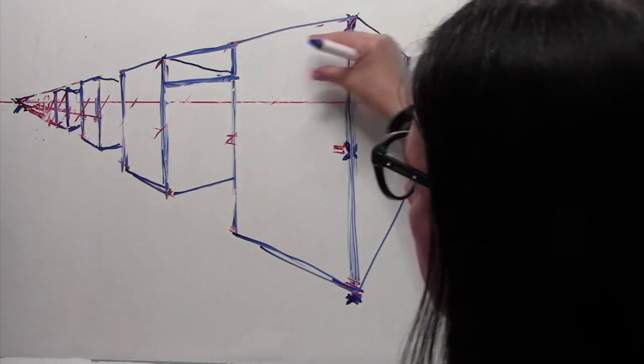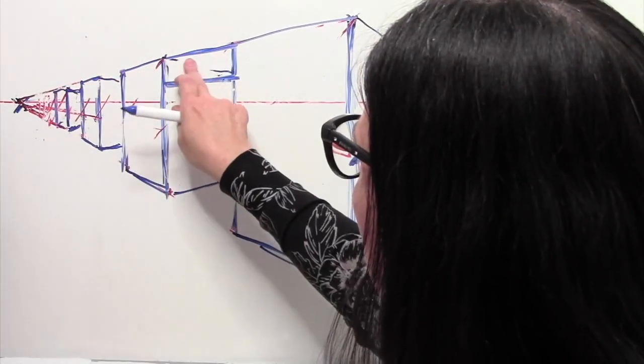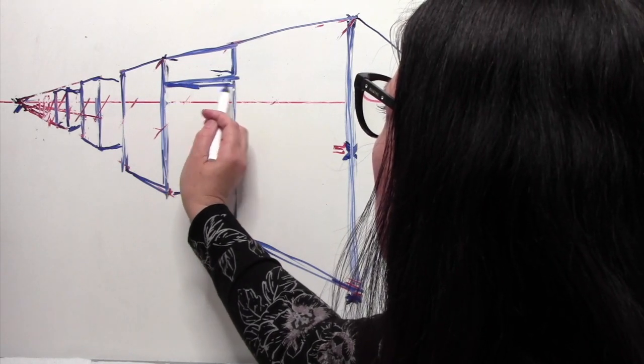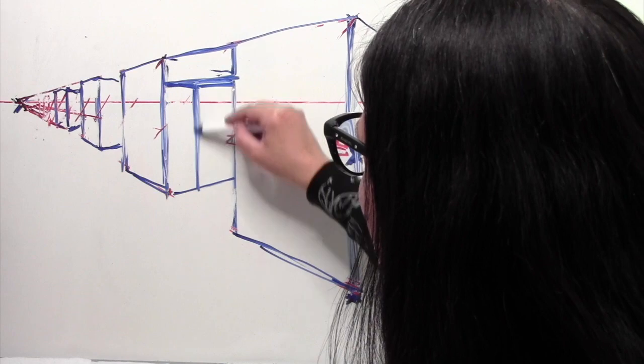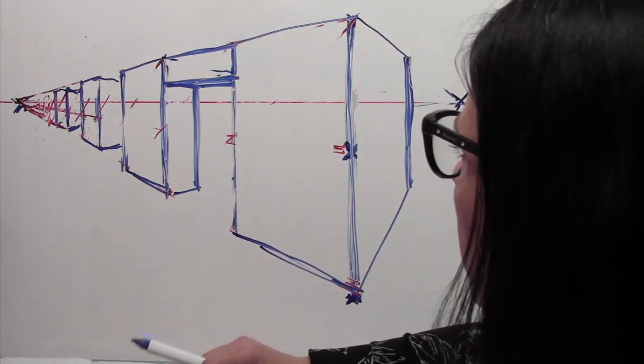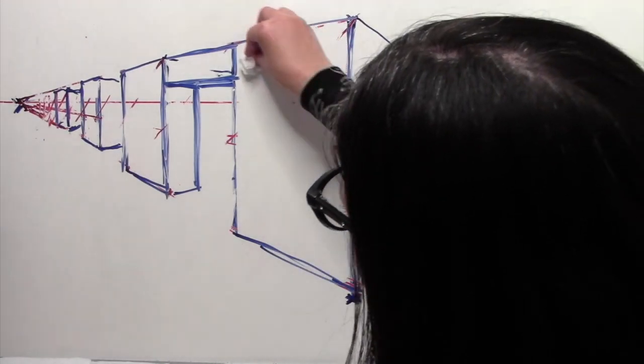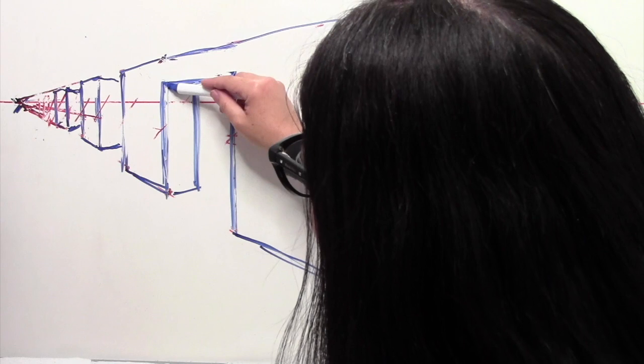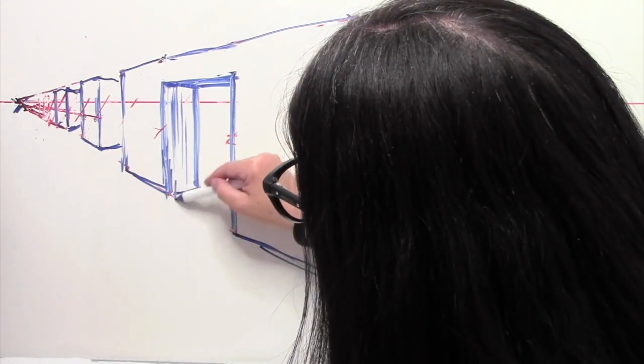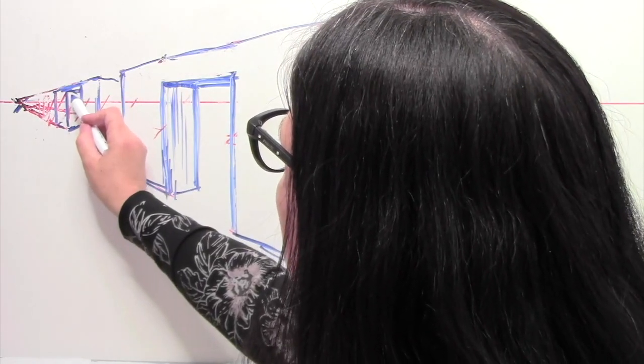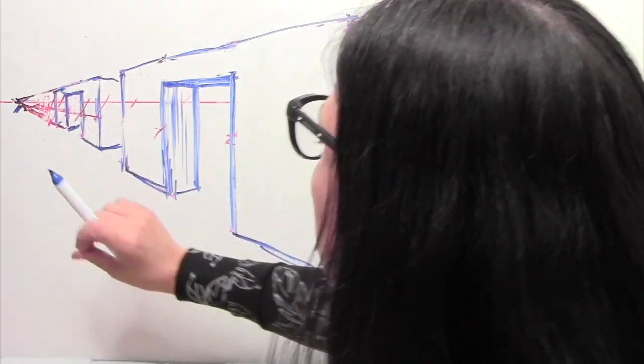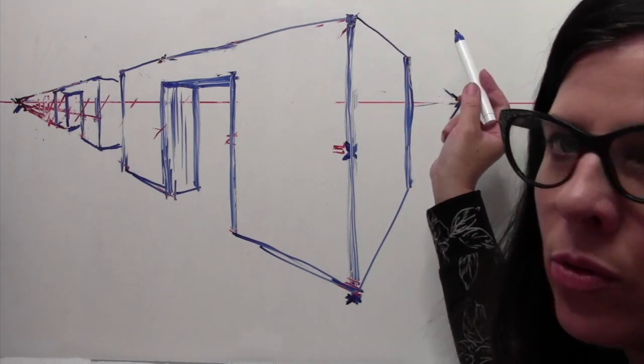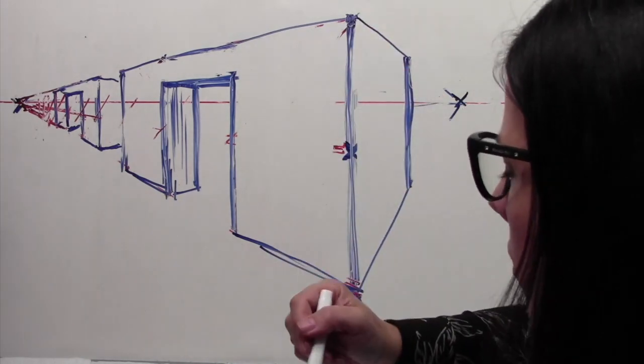And again, it's important to remember that in two-point perspective, everything is either going to this vanishing point or that one. So I'm starting to turn this into some type of building. And if I want to make this back one just the same, that is an option for me.